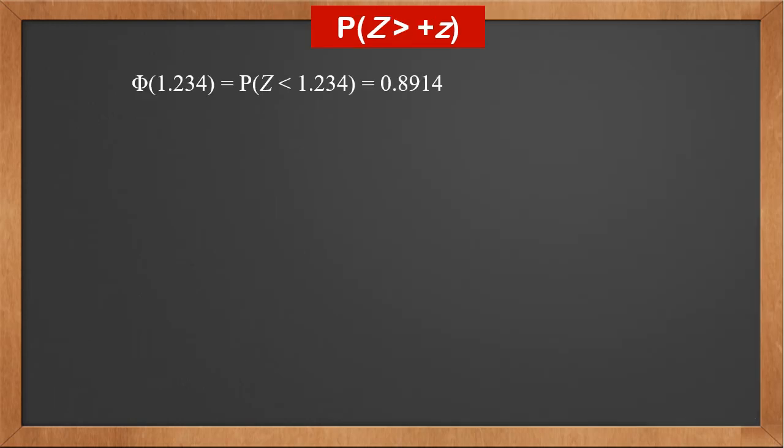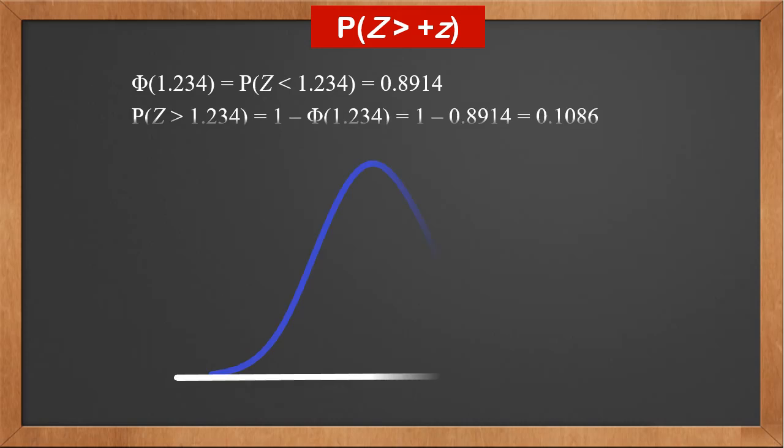Now we know phi(1.234) is 0.8914 by looking up the z-table. Then what is P(Z > 1.234)? From the graph, we know it's the area to the right of 1.234. Therefore, it is 1 - 0.8914 = 0.1086.